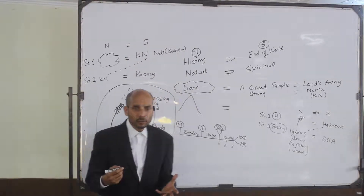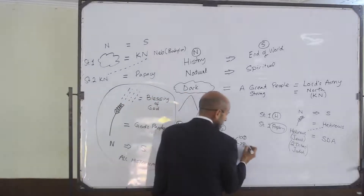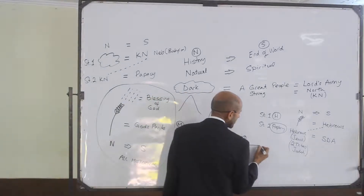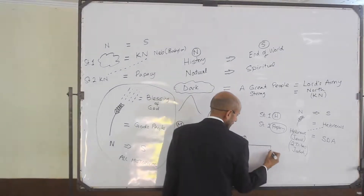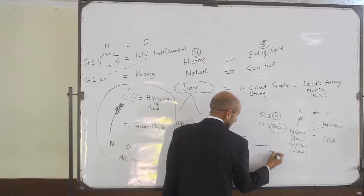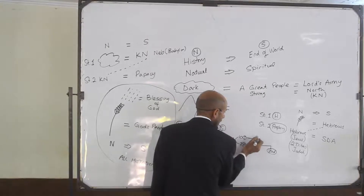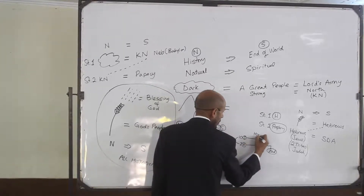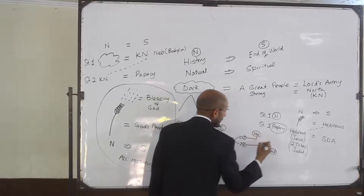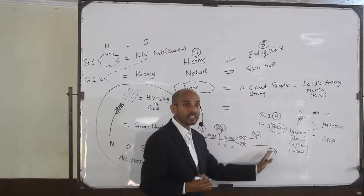These kings run all the way down to the last king of the two tribes, Zedekiah. The ten tribes ran to their last king, Hosea, and they came to their end long before Zedekiah.